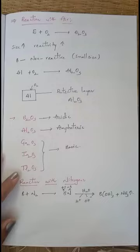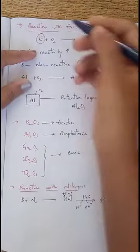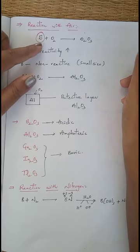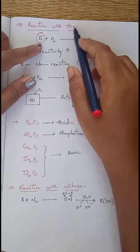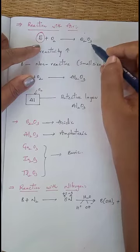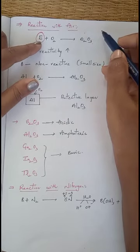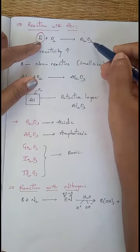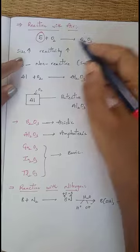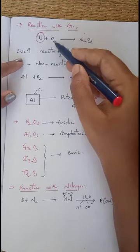The next property is reaction with air. These 13th group elements, represented generally by E, react specifically with oxygen to form E₂O₃ type of oxides. Down the group, as size increases, reactivity towards oxygen also increases. Boron is non-reactive towards oxygen at room temperature due to its small size. When size increases, reactivity towards oxygen also increases.